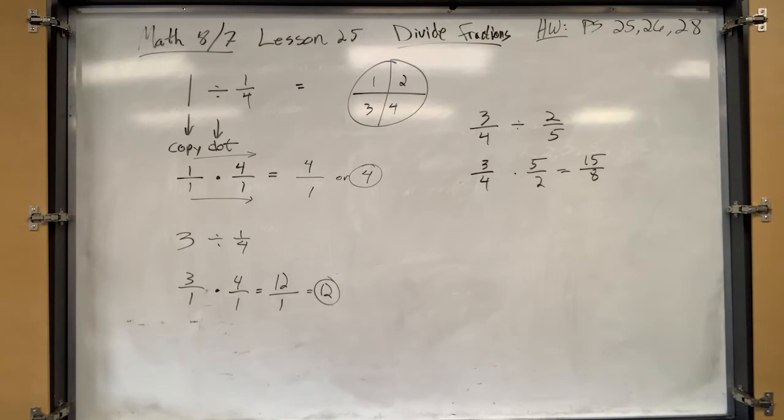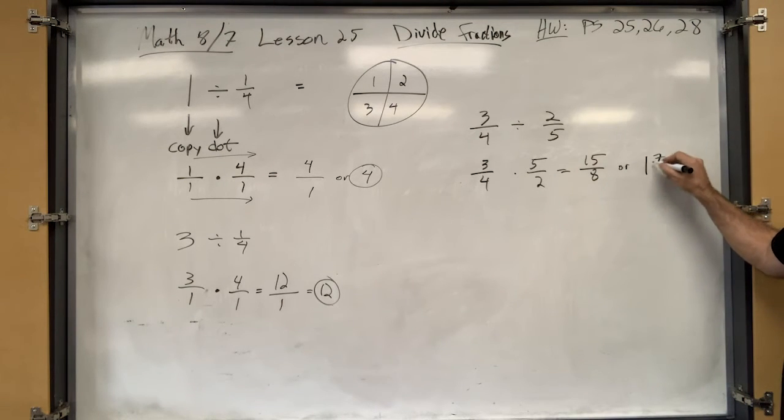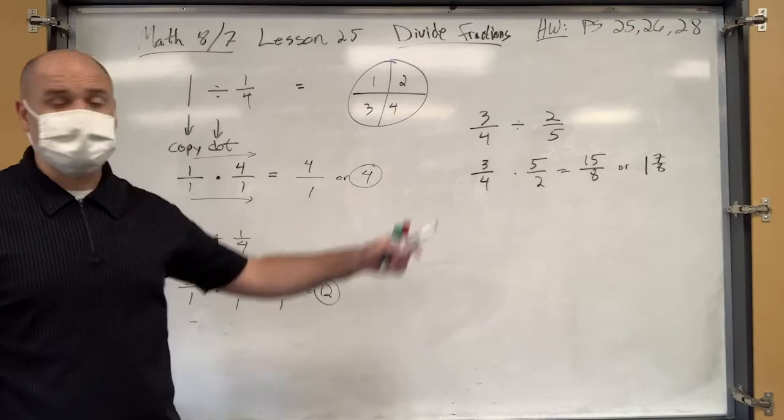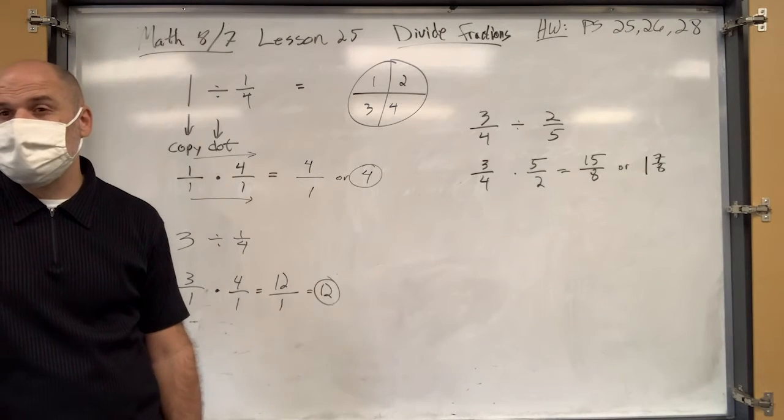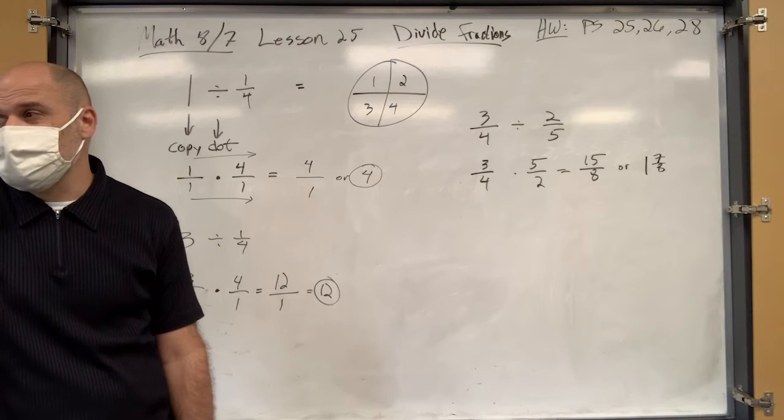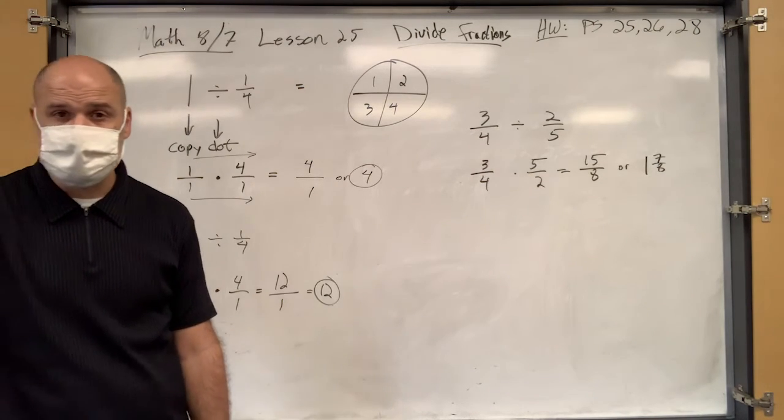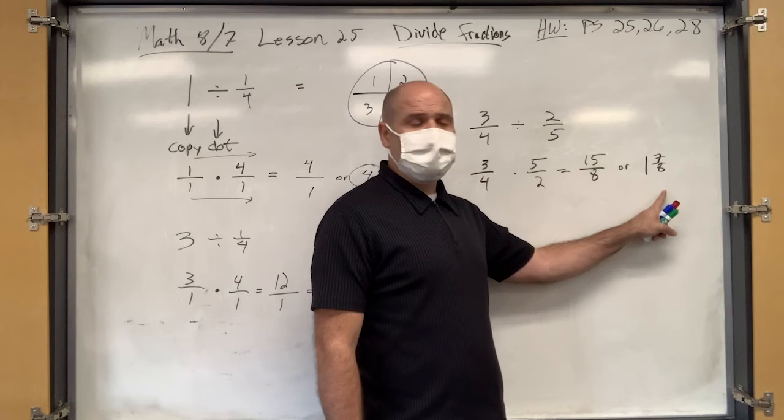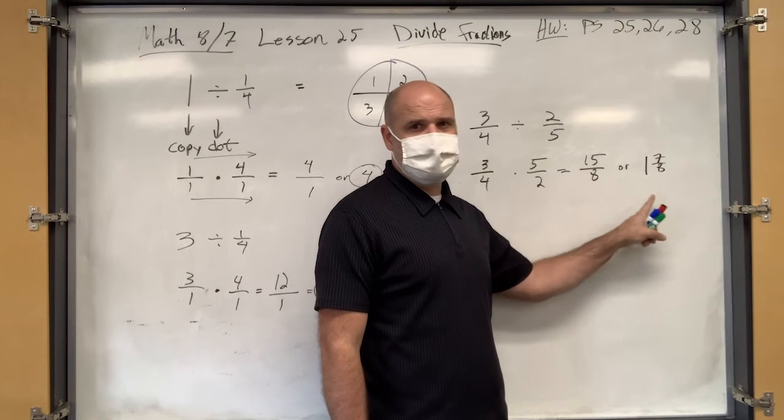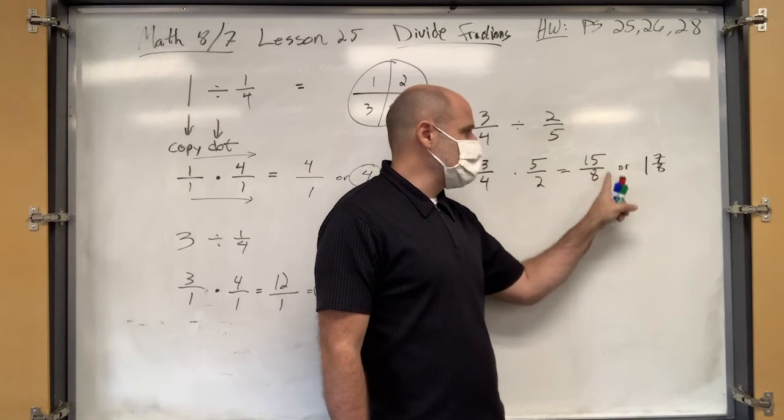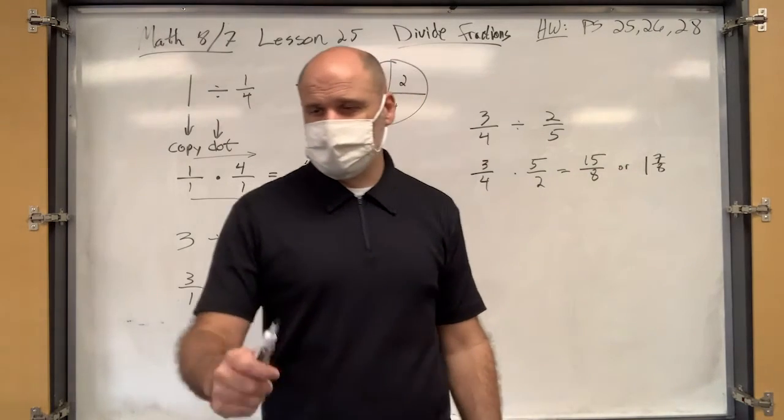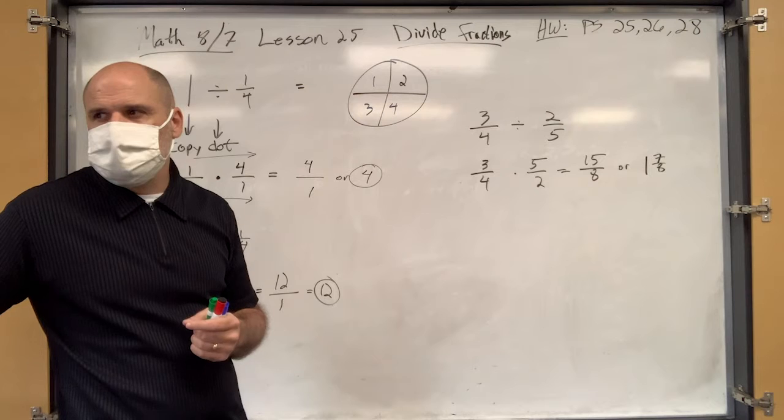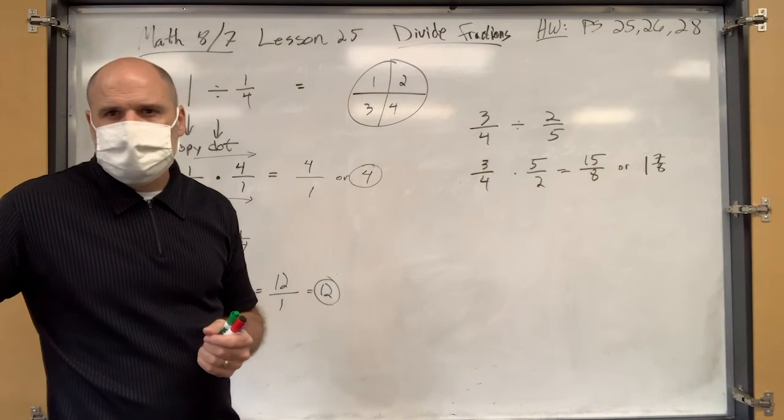Or one and seven-eighths. Or one and seven-eighths. Okay. Both answers are correct. If I say write your answer as a mixed number, then you should write it one and seven-eighths. If I say write your answer as an improper fraction, fifteen-eighths. Okay. If I don't say anything, you can answer it however you want. Just make sure it's reduced. Does everyone understand that this is still reduced? This is not more reduced than this. Okay. Reducing doesn't mean changing to a mixed number. Right. Reducing means taking out common factors. Okay.